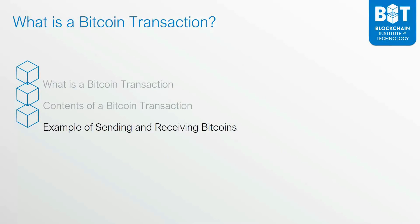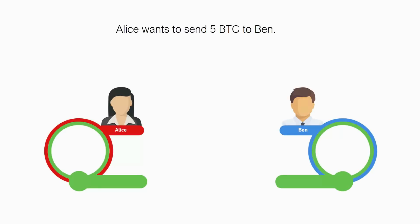Now that we have covered these elements, let's take a look at an example of sending and receiving bitcoins to illustrate exactly how the transfer of bitcoins happens between parties. In this example, Alice wants to send five bitcoins to Ben. In order for Alice to be able to send five bitcoins to Ben, she needs to have five bitcoins available.